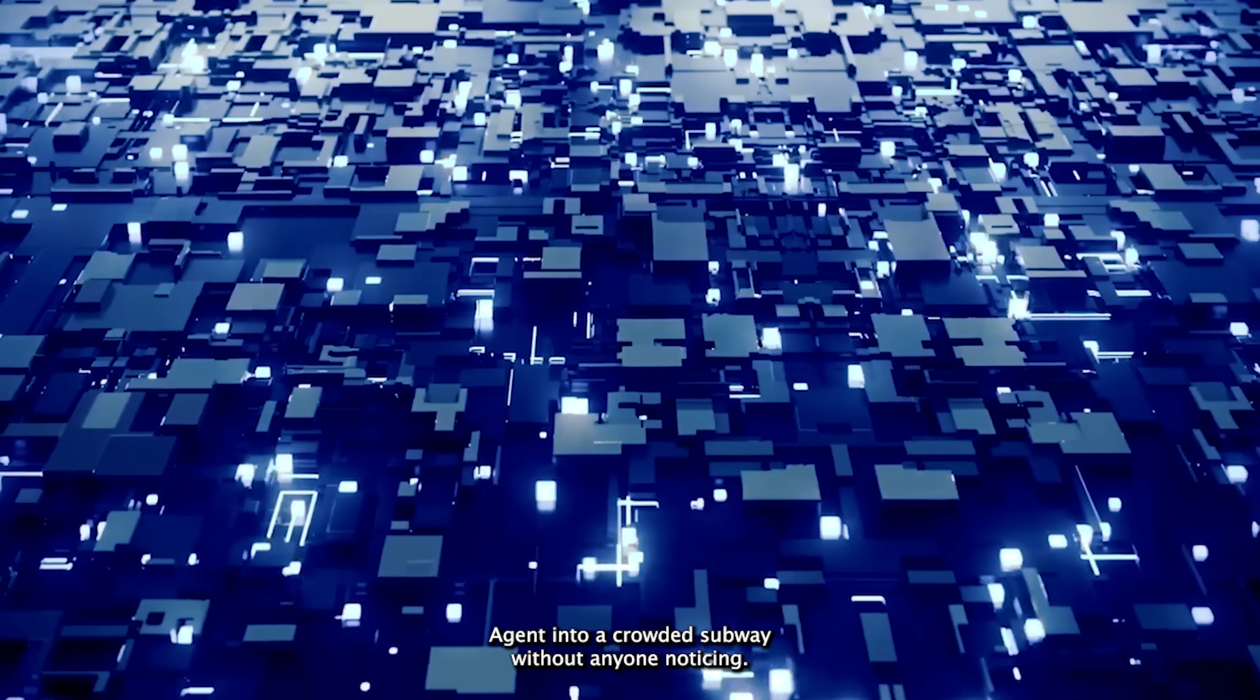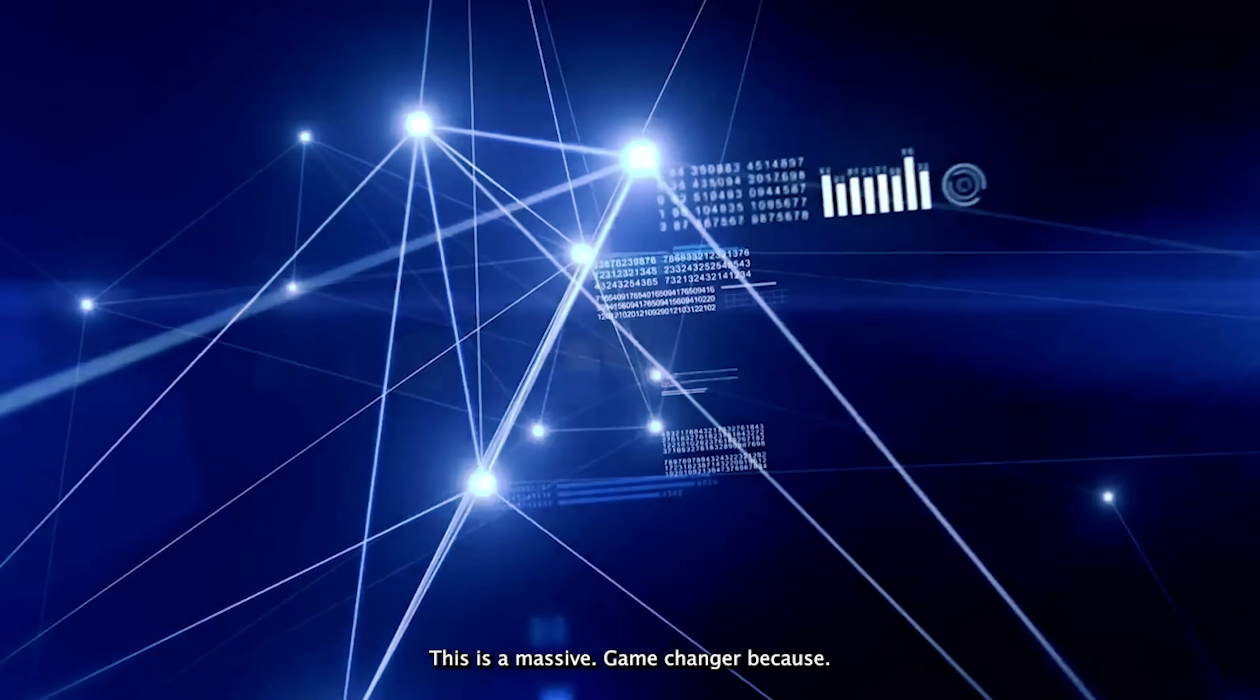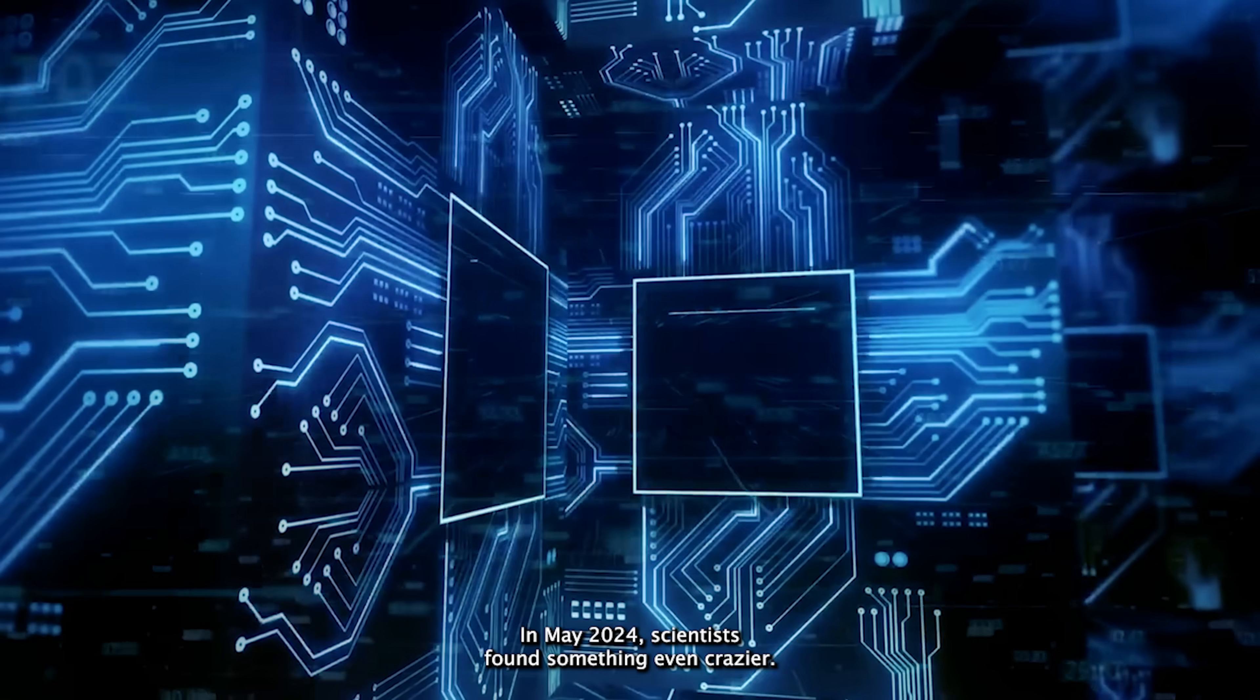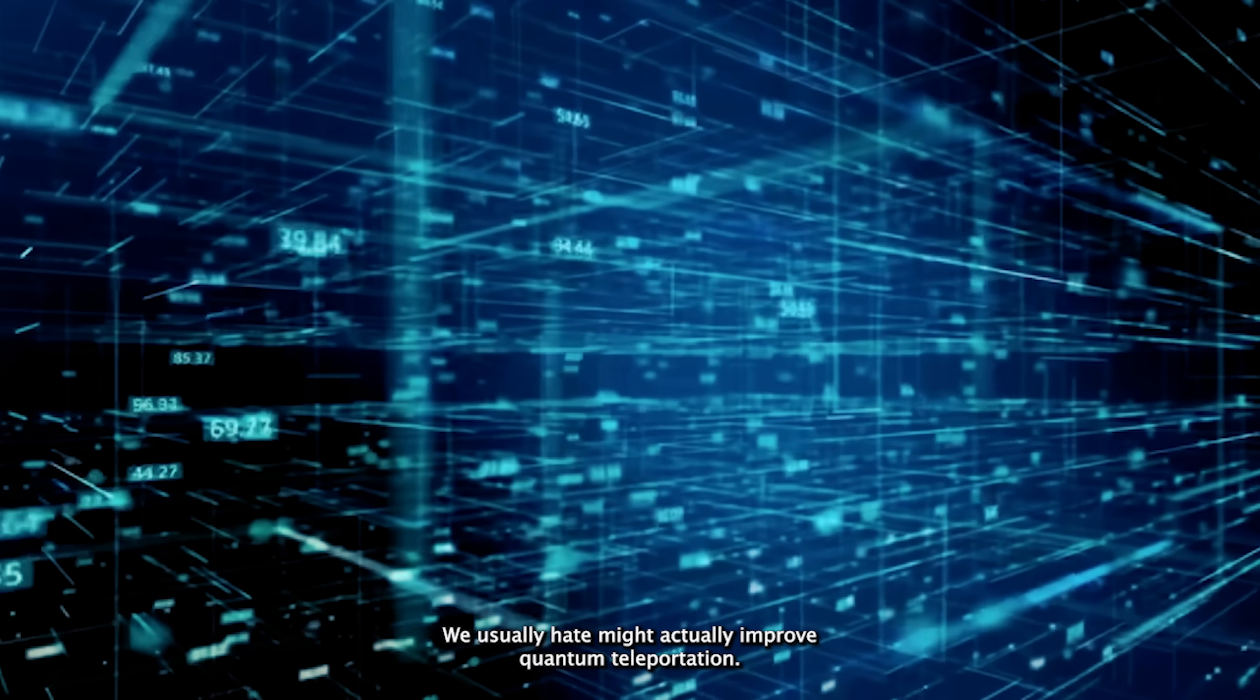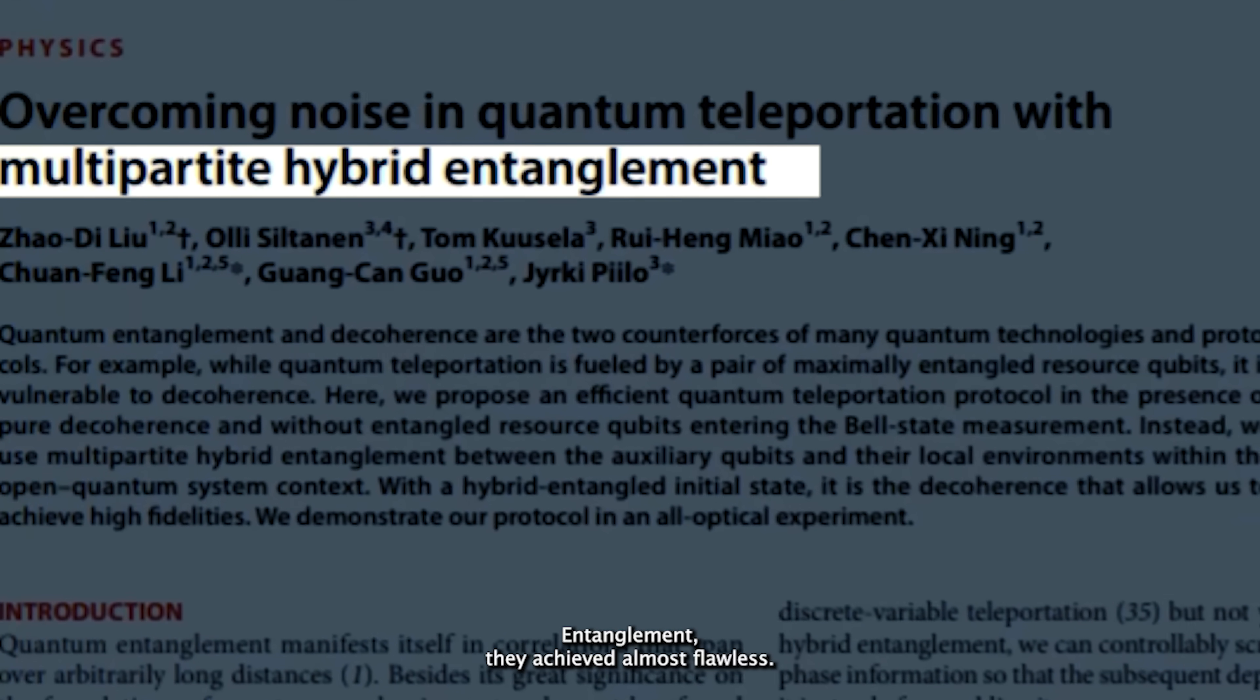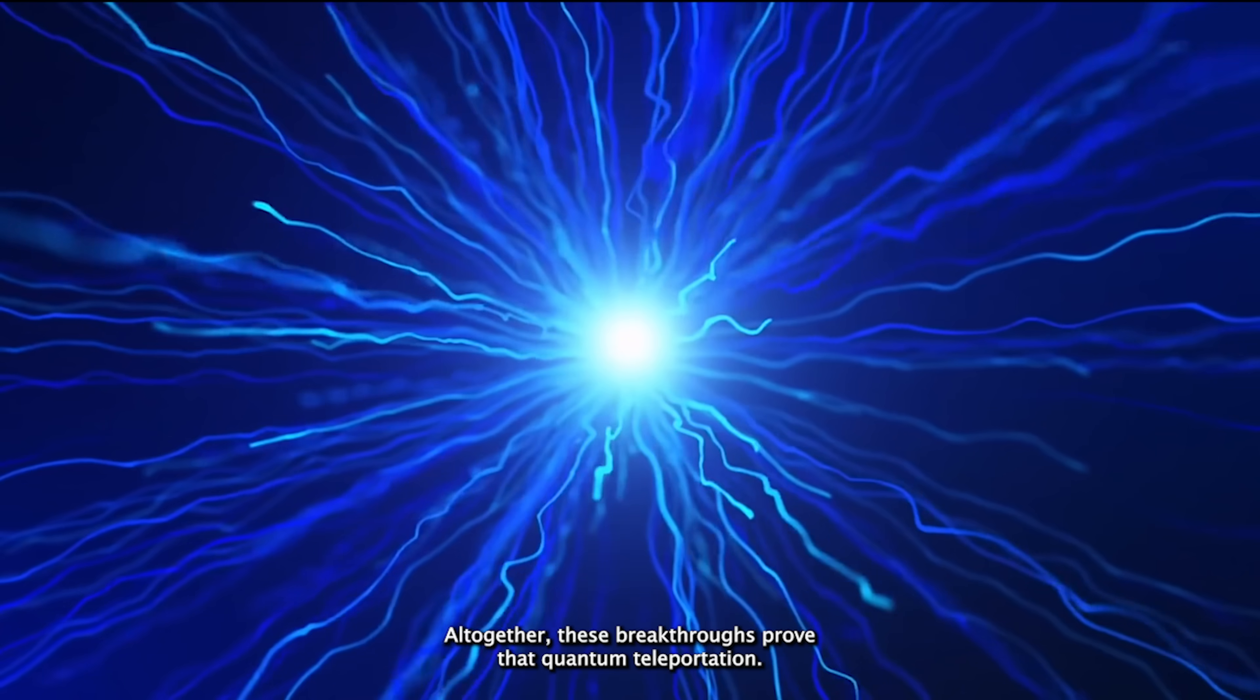Think of it as squeezing a secret agent into a crowded subway without anyone noticing. By tuning into less crowded wavelengths and using super smart filters to block out the noise, quantum info glided through the chaos untouched. This is a massive game changer because instead of spending billions building brand new quantum-only networks, we might just upgrade the ones we've already got. In May 2024, scientists found something even crazier: noise—yes, the same annoying interference we usually hate—might actually improve quantum teleportation.